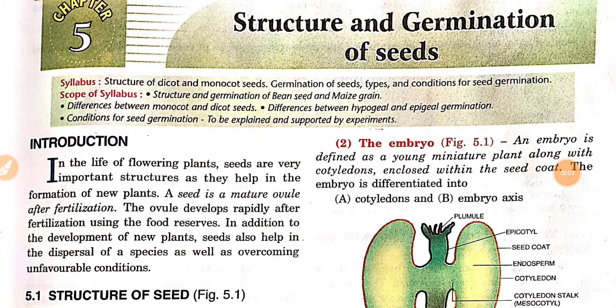Dear students, I hope you are all well and studying at home. Last few weeks we discussed about the structure of flower, pollination, and reproduction in flowers. Now in the next chapter we will understand the structure and germination of seeds. In this chapter you will understand the structure of dicot and monocot seeds, germination of seeds, their types, and conditions for seed germination.